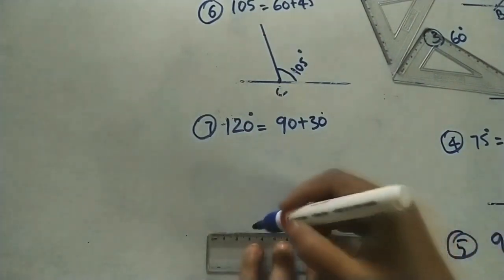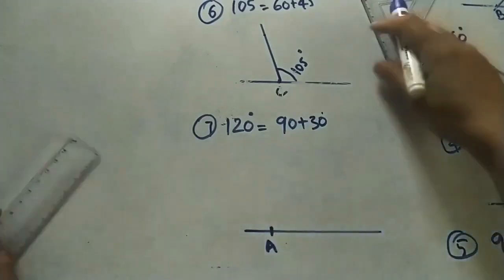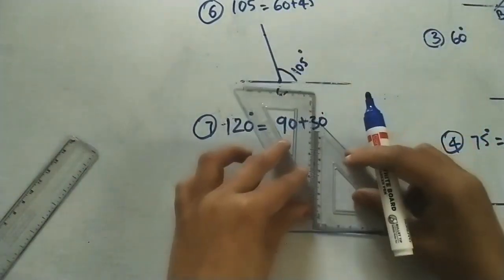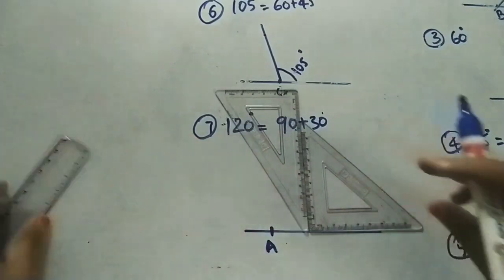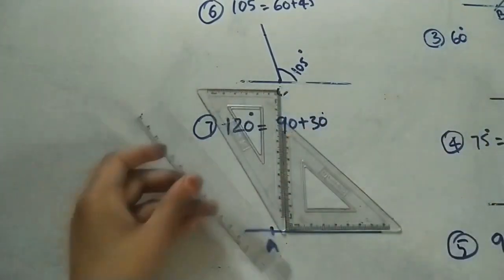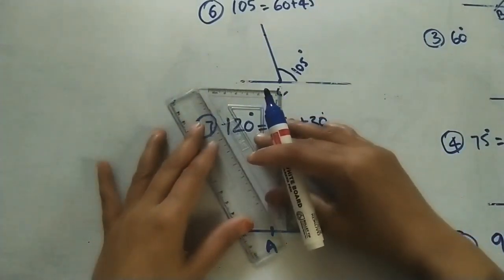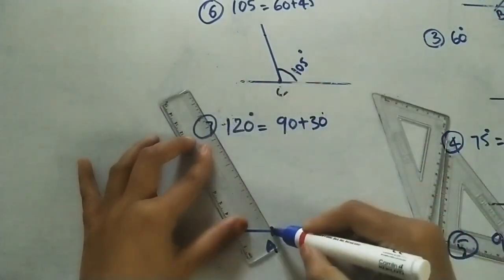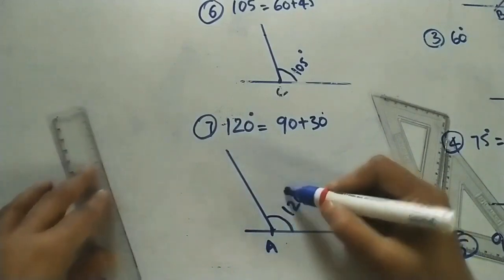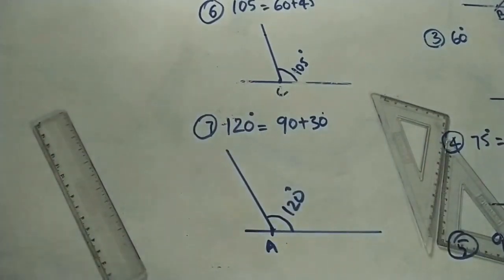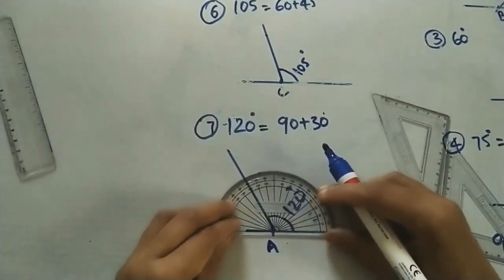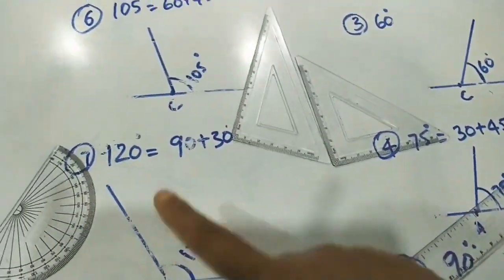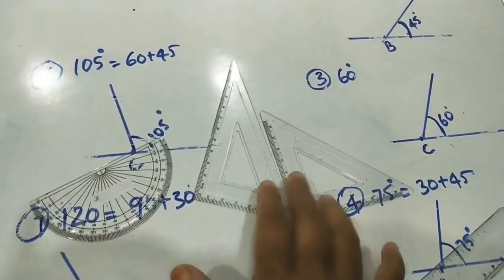Next, 120 degrees — which is 90 plus 30. Draw a horizontal line and mark at point A. This is the 90-degree angle and this is the 30-degree angle. Move the arrangement near the line, keep the scale coinciding with this side, move so the scale passes through the point. Remove and draw the line — this angle is 120 degrees. Check: this angle is 120 degrees. So using set squares, we can mark all angles without a protractor.